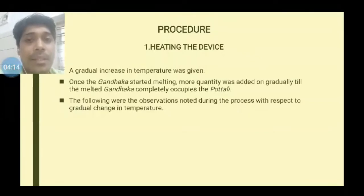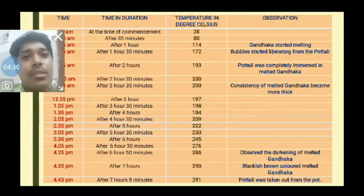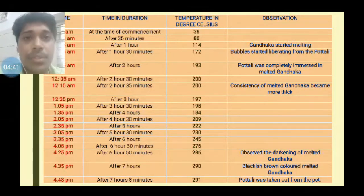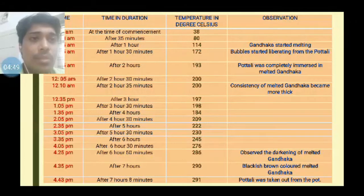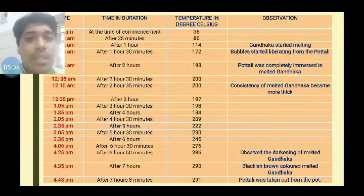The procedure involves gradual heating. We started at 9:35 a.m. with an initial pyrometer reading of 30 degrees Celsius. After one hour, when the temperature reached 140 degrees Celsius, Gandhaga started melting, and more Gandhaga was added. When the temperature reached 193 degrees Celsius, the portali was completely immersed in molten Gandhaga. After 2 hours and 35 minutes, we maintained the temperature within 200 degrees Celsius for the first half of the procedure — approximately 4 hours. The total procedure lasted more than 7 hours.